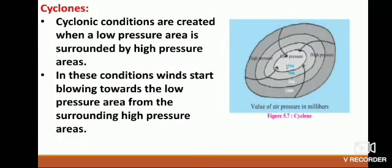Cyclones. Cyclonic conditions are created when a low pressure area is surrounded by a high pressure area. In these conditions, winds start blowing towards the low pressure area from the surrounding high pressure areas. Due to the rotation of the earth, cyclonic winds in the northern hemisphere move in an anticlockwise direction, and in the southern hemisphere they move in a clockwise direction.